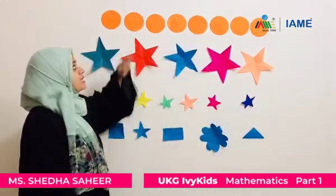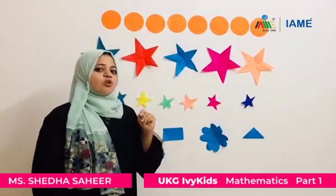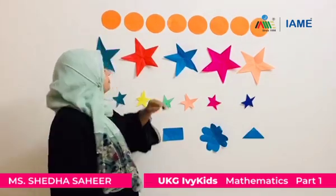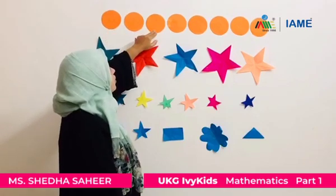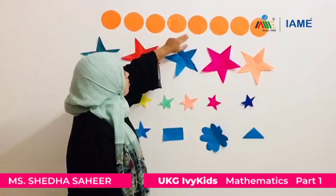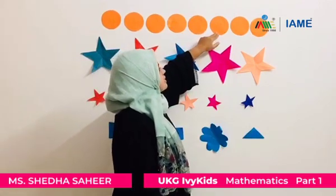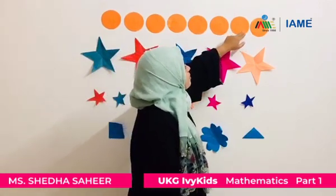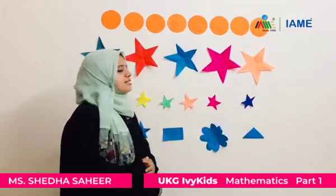Now we will count how many circles are here. Count with me. One, two, three, four, five, six, seven, eight. So how many circles are there? Eight circles.